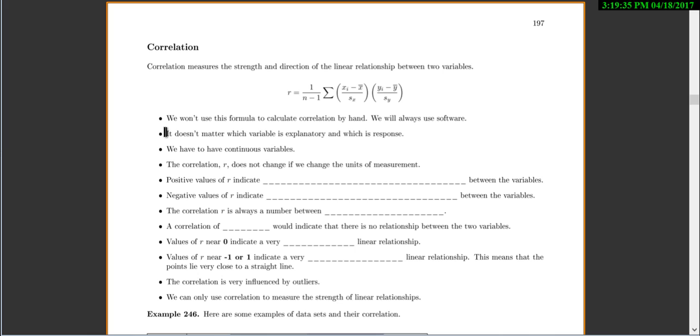Now for correlation, there's a few things to know. First, it doesn't matter which variable is explanatory and which one's response. You'll get the same answer. You do have to have two continuous variables, though. The correlation, interestingly enough, doesn't change if you change the units of measurement. So if you change from measuring everything in feet to measuring everything in inches, that doesn't change your correlation.